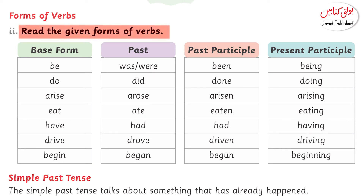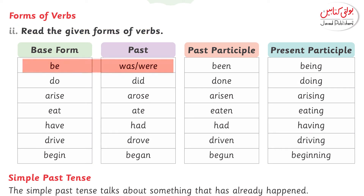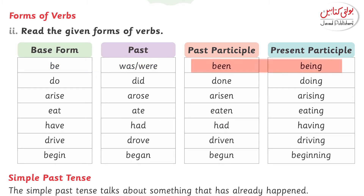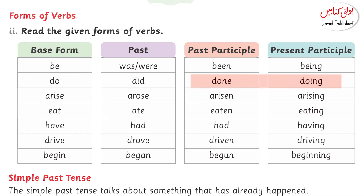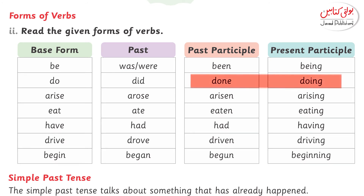Read the given forms of verb. Yahan pe forms of verb di gayi hain. Agar base form hummare paas 'be' hai, toh uski past form kya hogi? Was, were. Past participle hummare paas 'been' hoga, present participle 'being' hoga. Isi tarah 'do' ka past kya hoga? Did. Past participle 'done' and present participle 'doing'.